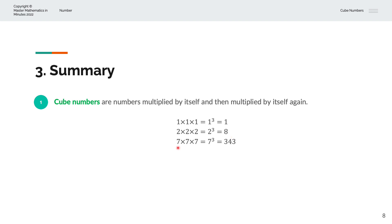And finally, we have the number 7, multiplied by itself, which is 7, and multiplied by itself again, which is 7. And that is 7 cubed, and that equals 343. Thank you very much for watching. This is Master Mathematics in Minutes.